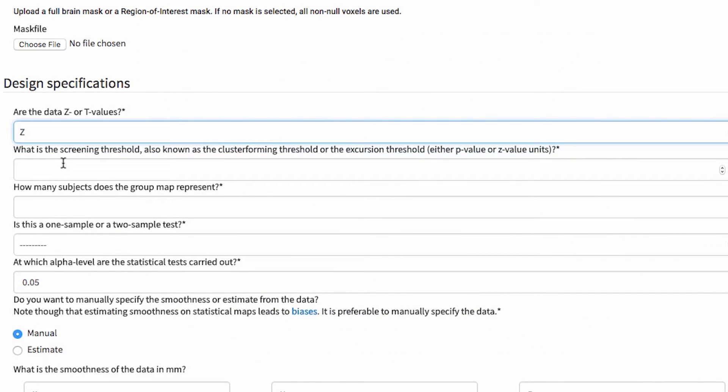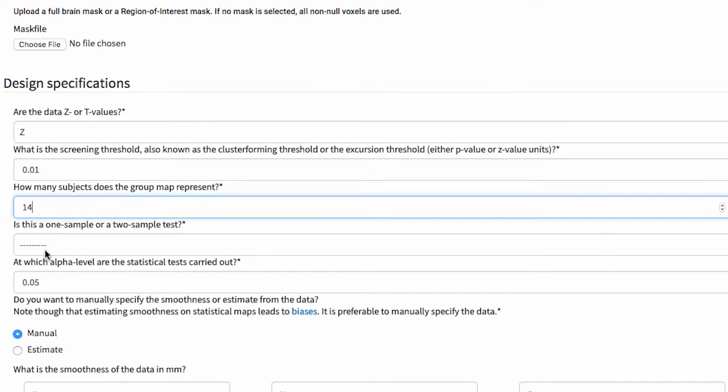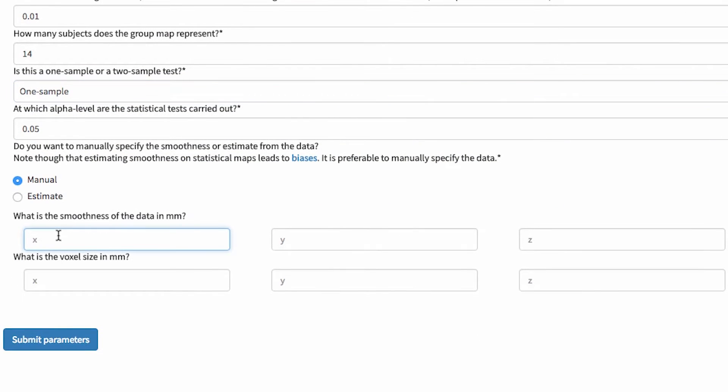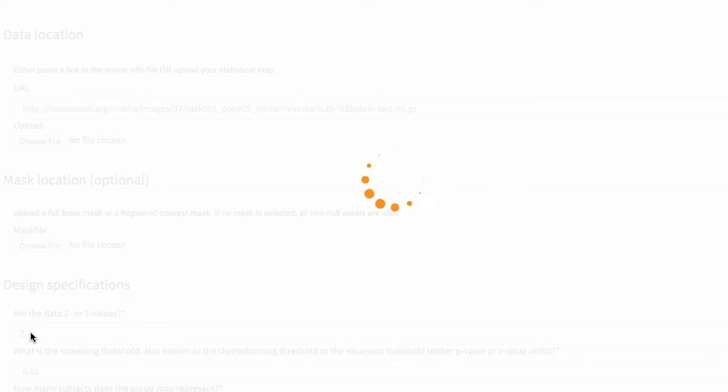So I'm going to fill in all those parameters right here. This is going to be Z. Screening threshold 0.01, 14 subjects, one sample test, 0.05 alpha level, smoothness of 888, 222 for the voxel size, and we're going to submit the parameters.